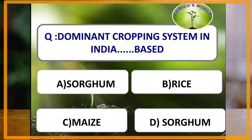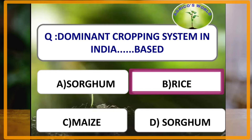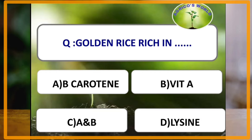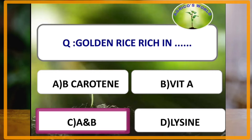The dominant cropping system in India is the rice-based cropping system, where wheat is sown after rice. However, a disadvantage is that it leads to delayed sowing of wheat. Golden rice is rice developed by biotechnological methods, having an increased amount of vitamin A and beta-carotene.